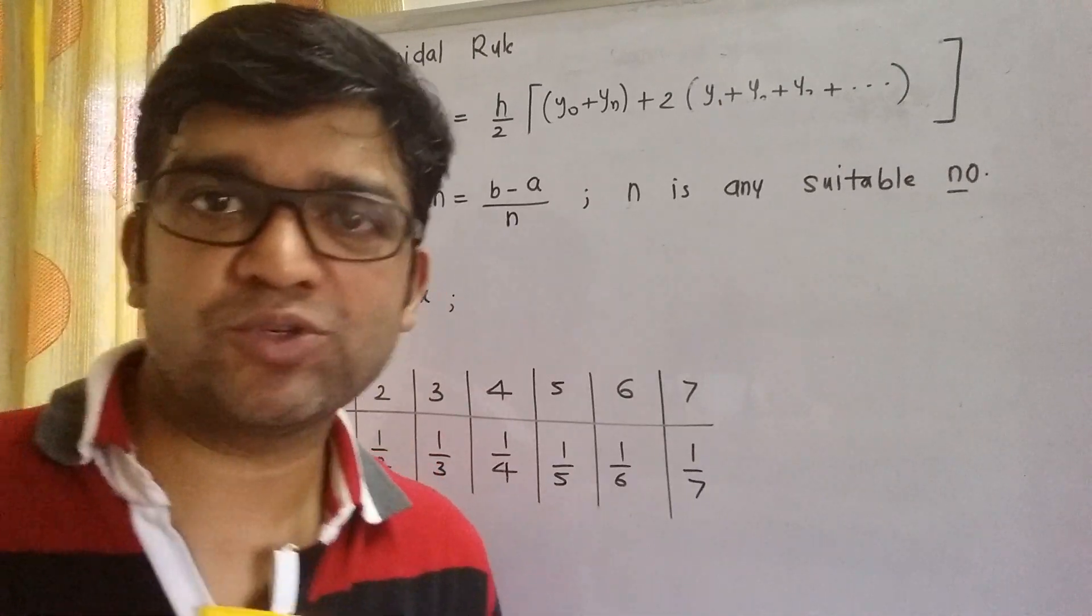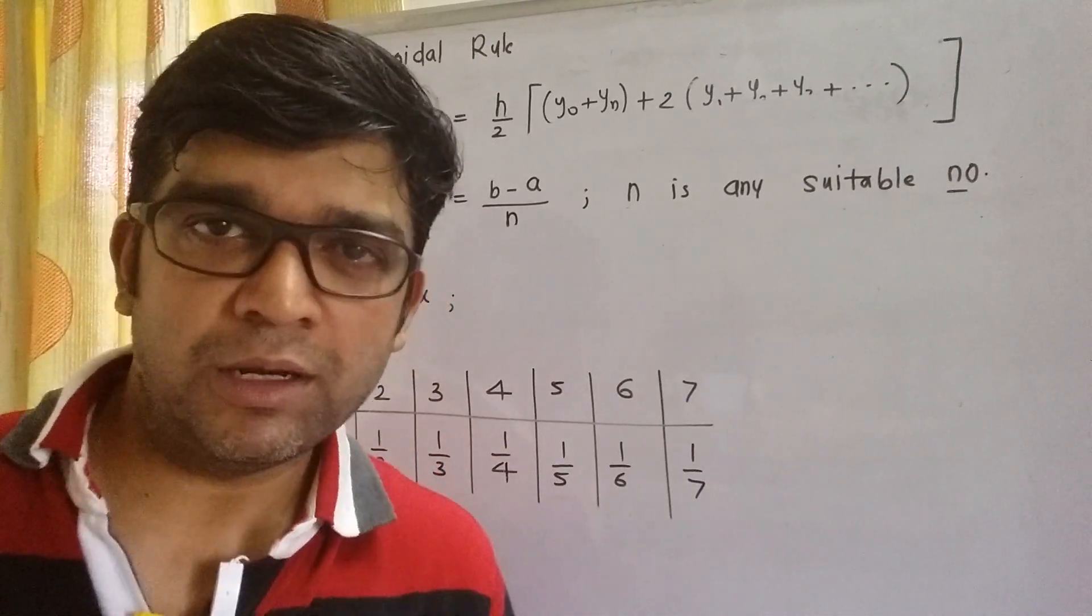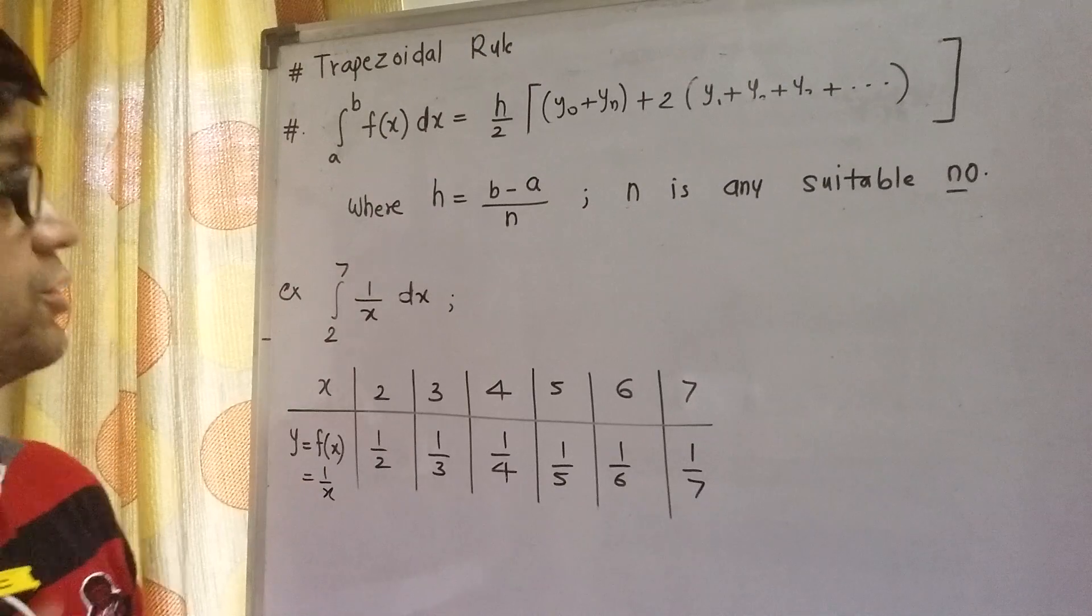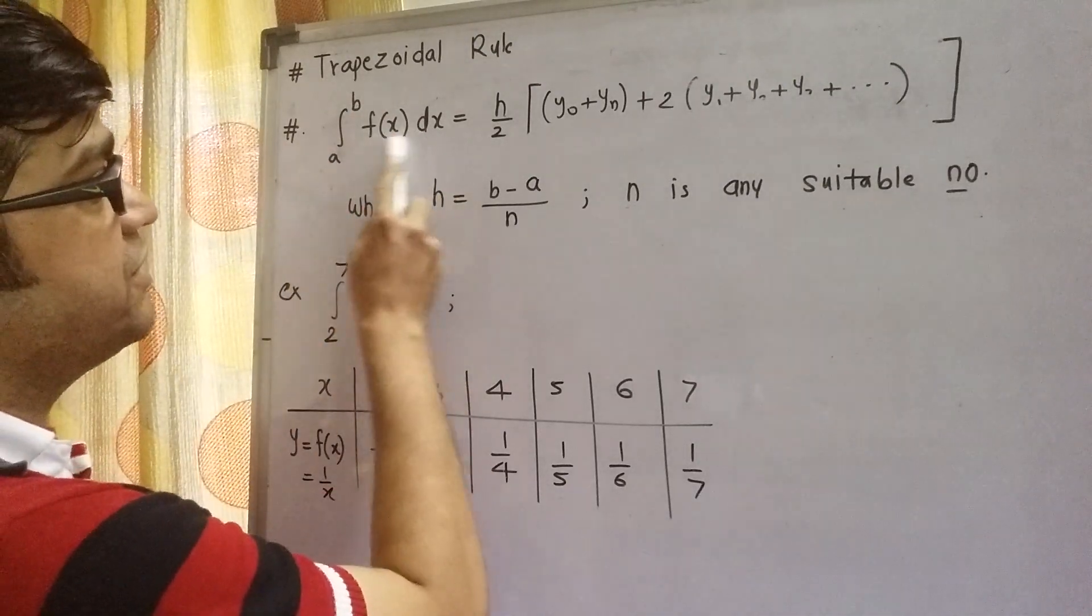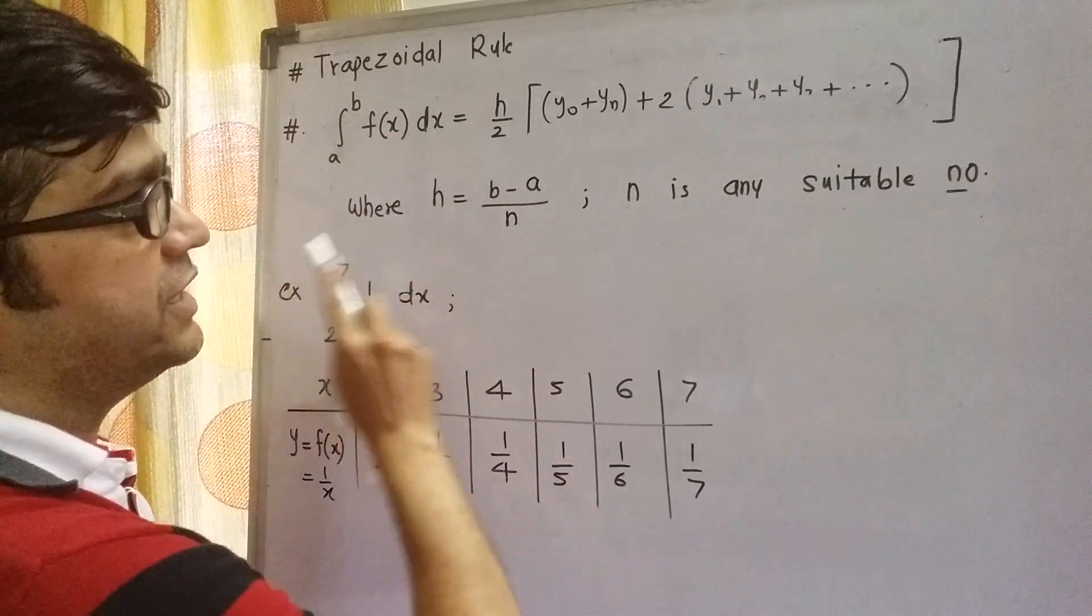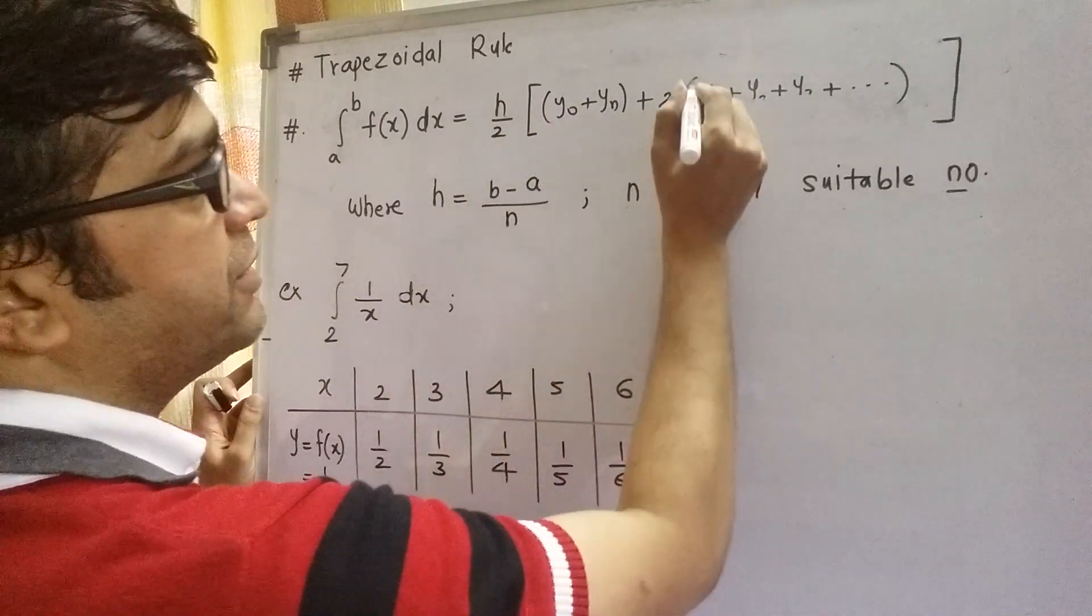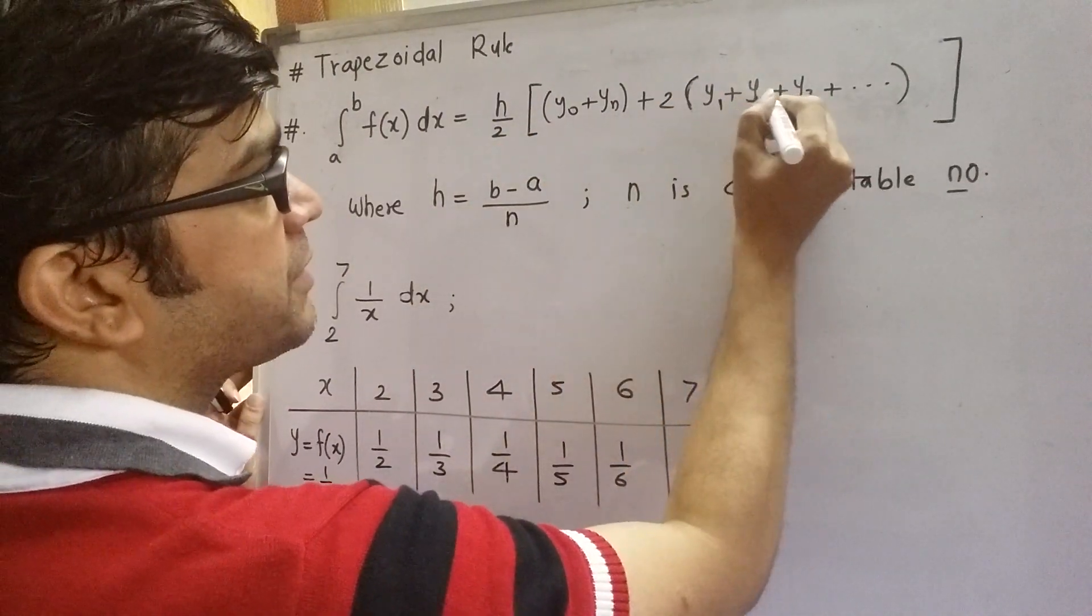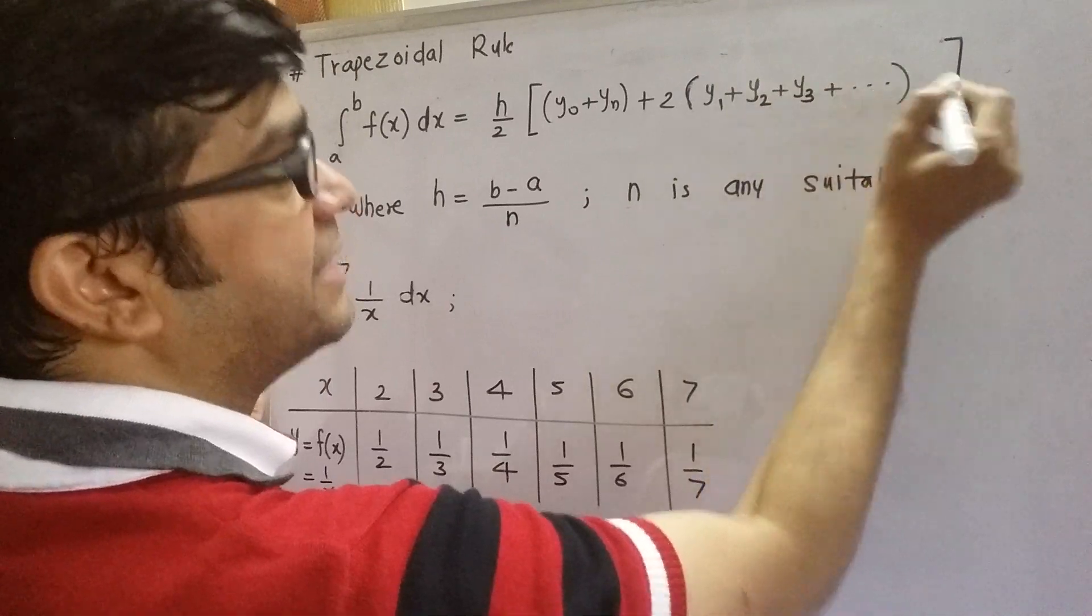In that we are going to discuss trapezoidal rule. So step one, look at the formula. Trapezoidal rule: integral a to b f(x) dx equals h by 2 times y0 plus yn plus 2 times y1 plus y2 plus y3 and so on.